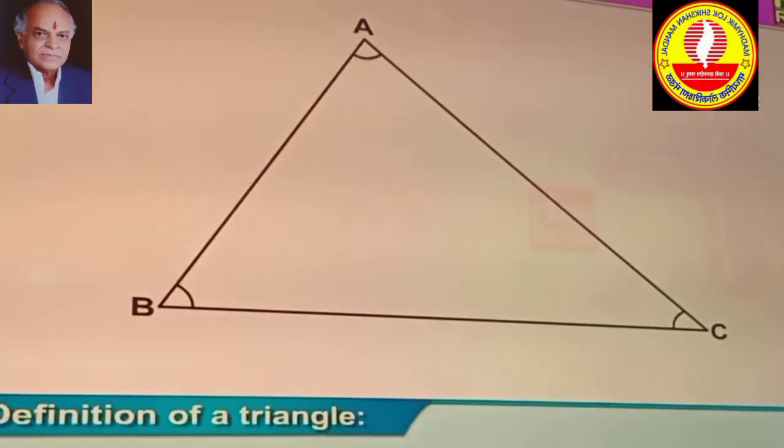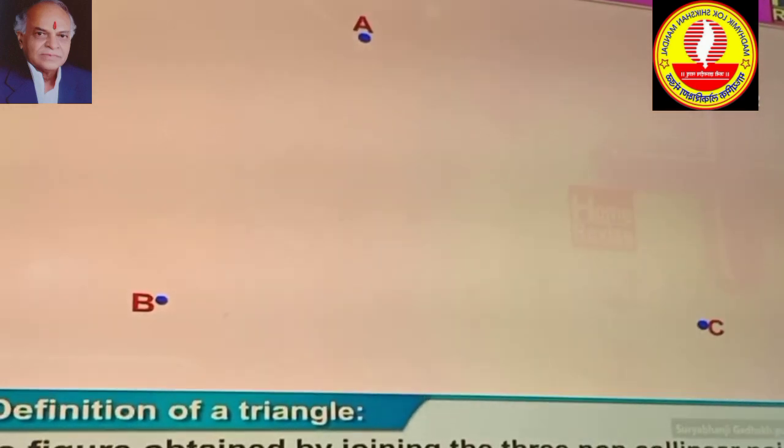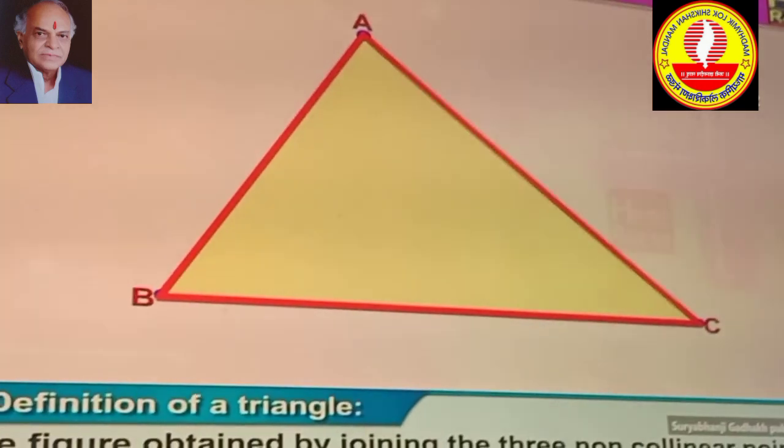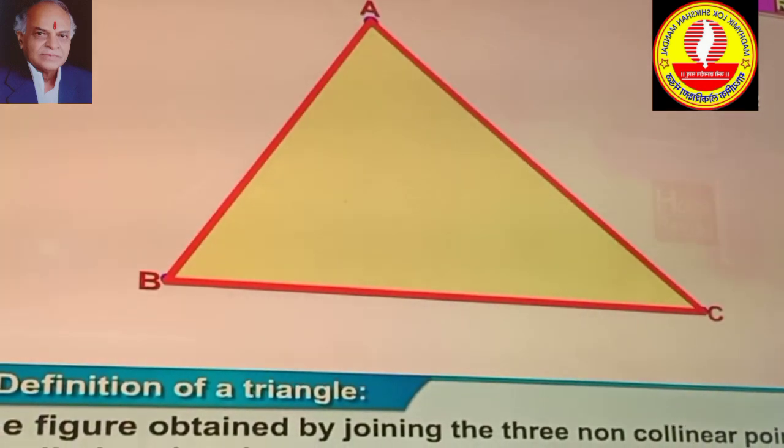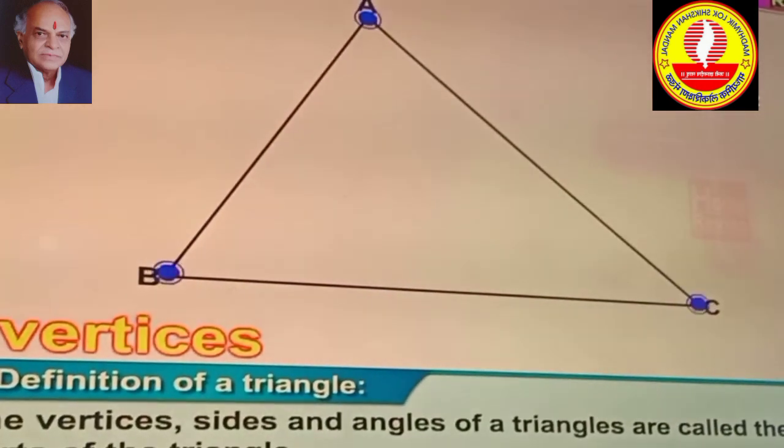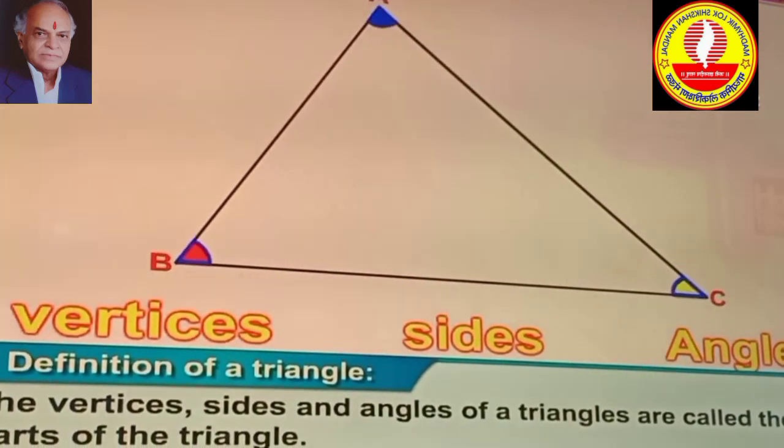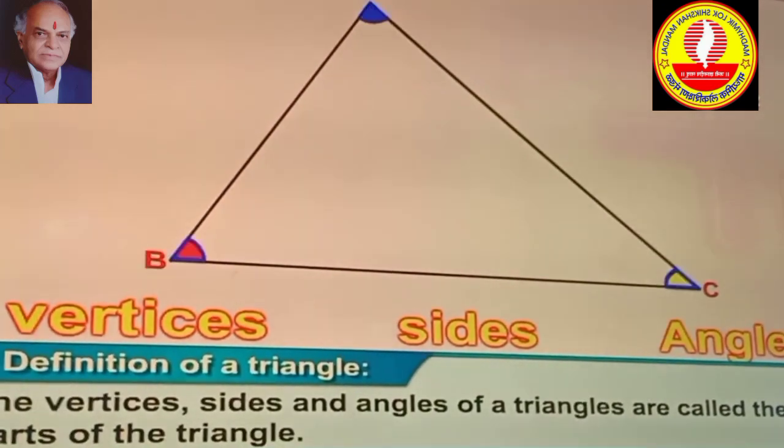Definition of a triangle: The figure obtained by joining the three non-collinear points is called a triangle. The vertices, sides and angles of triangles are called the parts of the triangle.